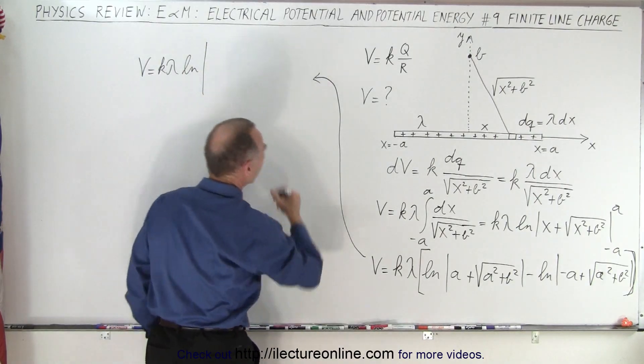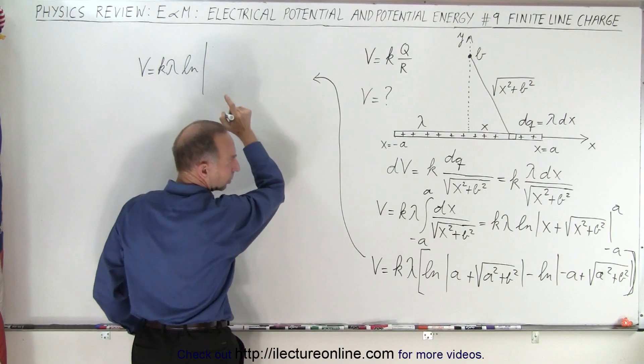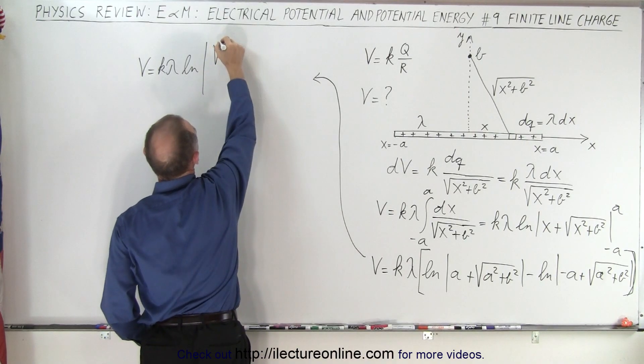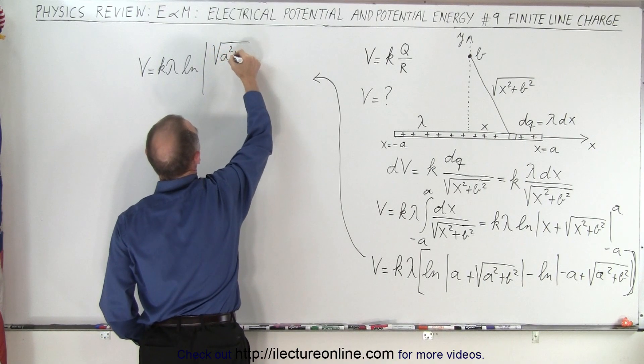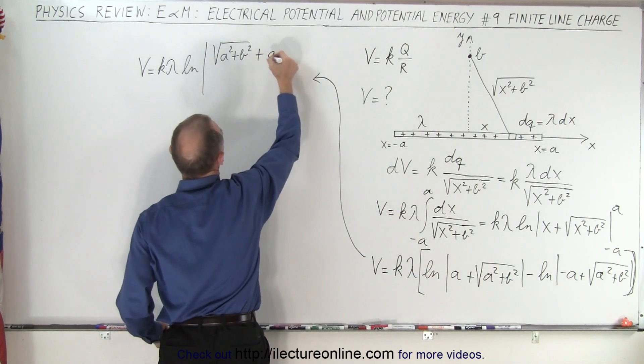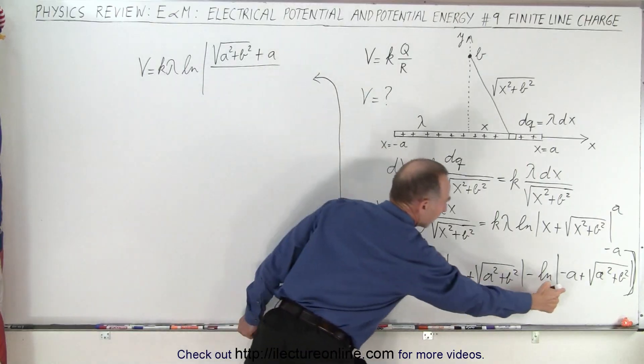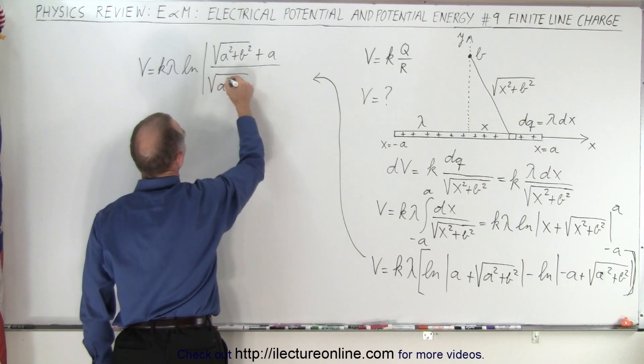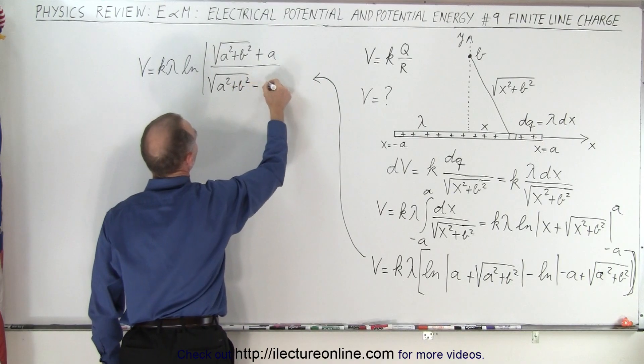...and then in the numerator we'll end up with the square root of a squared plus b squared plus a, so I've reversed order on that one, divided by this. But I'm going to reverse the order so we're going to write this as the square root of a squared plus b squared minus a.